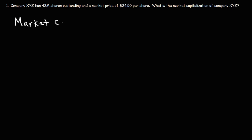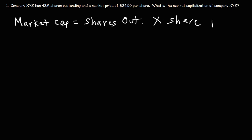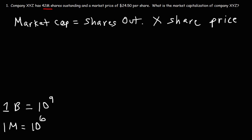The market capitalization is equal to the number of shares outstanding times the price of each share. You need to be familiar with the units: a capital M stands for million, which is 10 to the sixth power; B stands for billion, which is 10 to the ninth power; and a thousand represents a kilo, which is 10 to the third power.